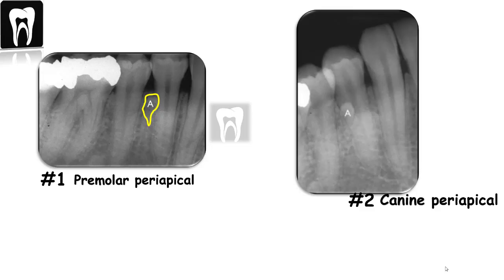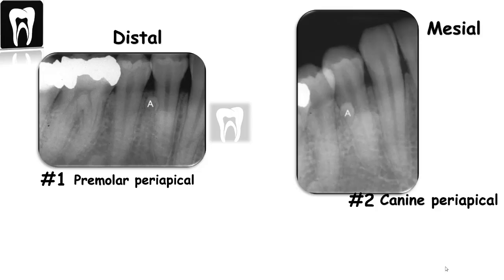Step number three: determine which direction the image appears to move from one to two. So from image number one, that is the periapical radiograph of the premolars, we're going to the canine periapical radiograph — so we're moving to the mesial or anterior.